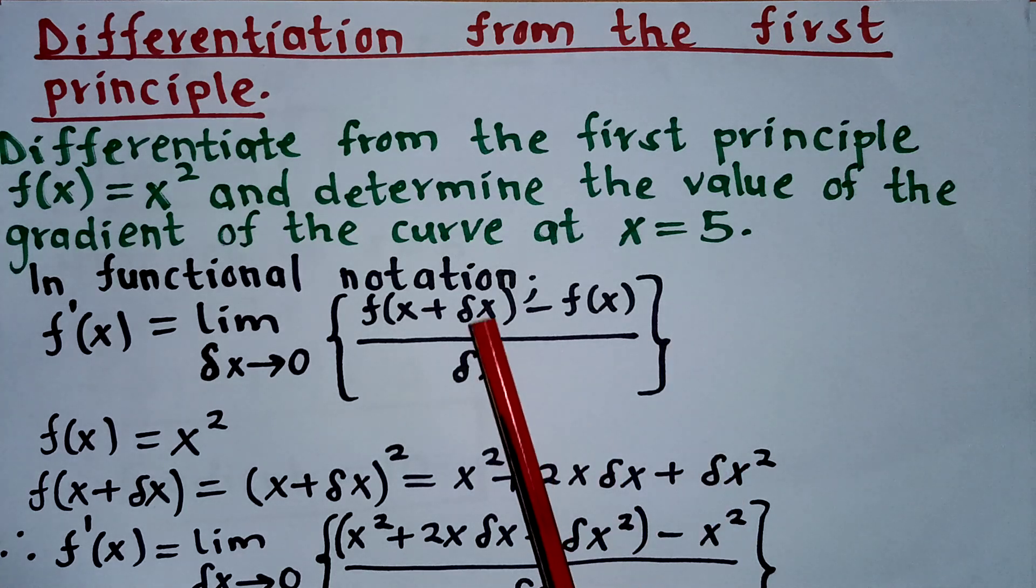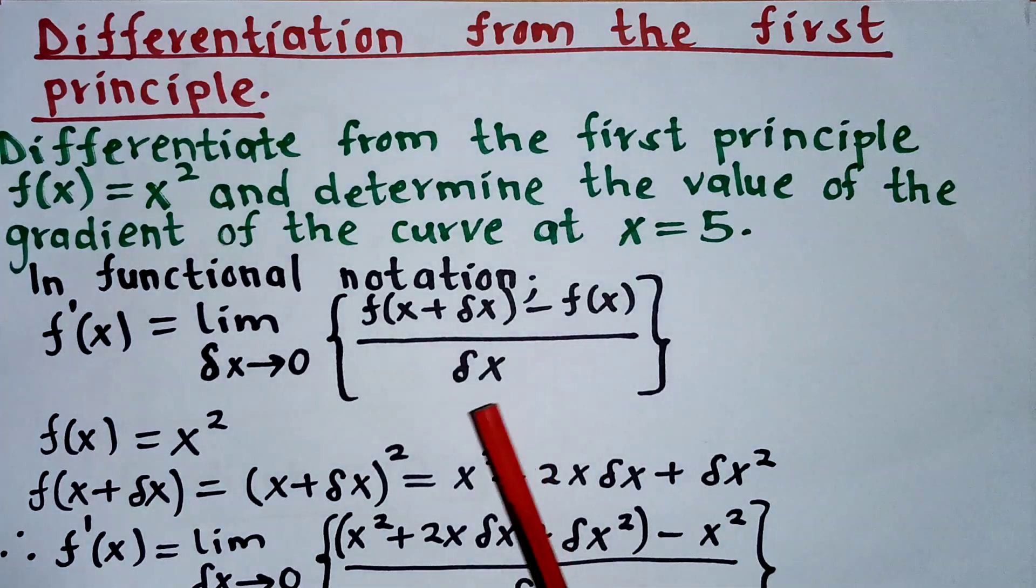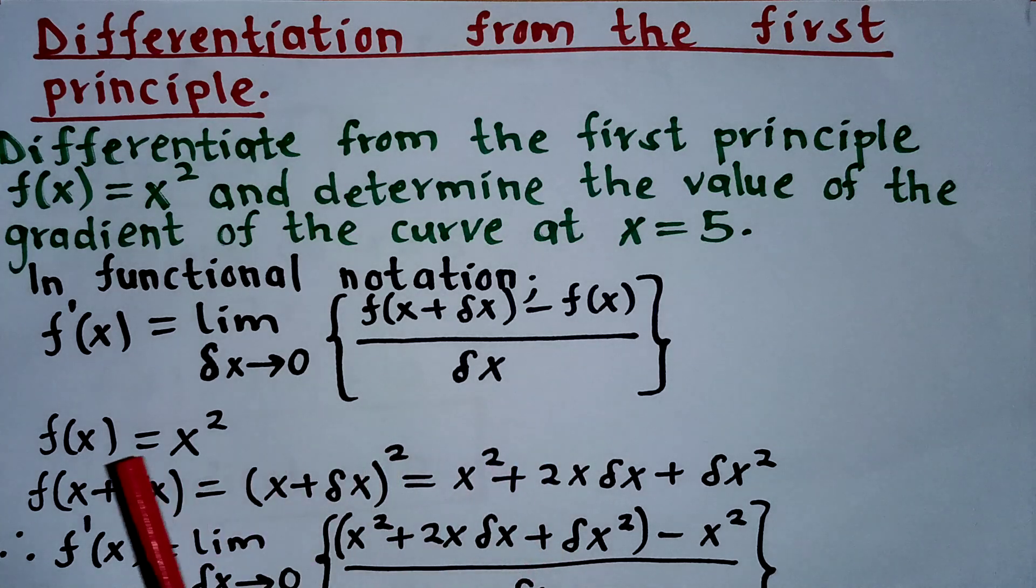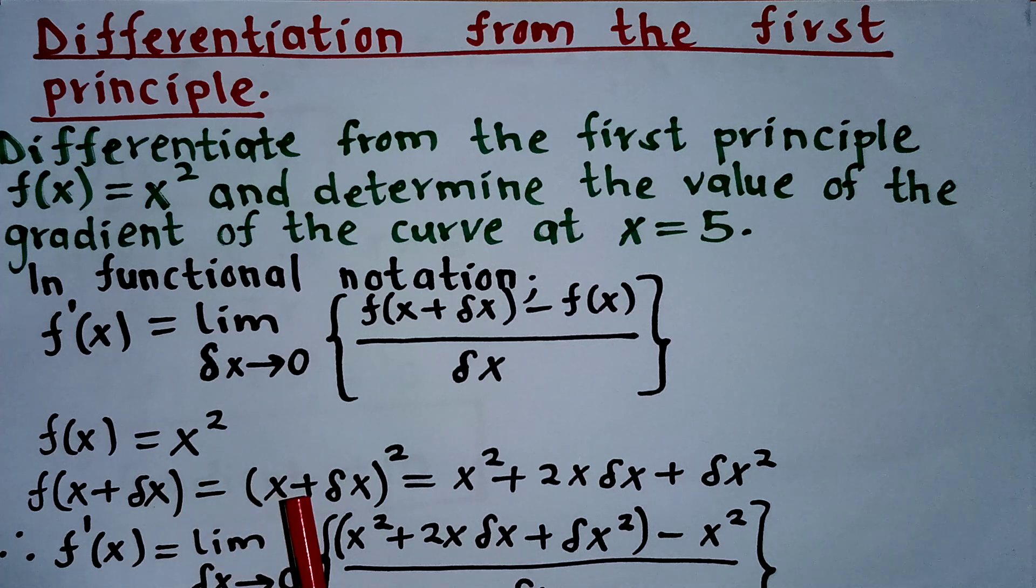Most people are going to use h instead of δx, which is also perfect. So I'm just going to continue this. My function f(x) here is x², which means the function f(x + δx) is going to be (x + δx)².